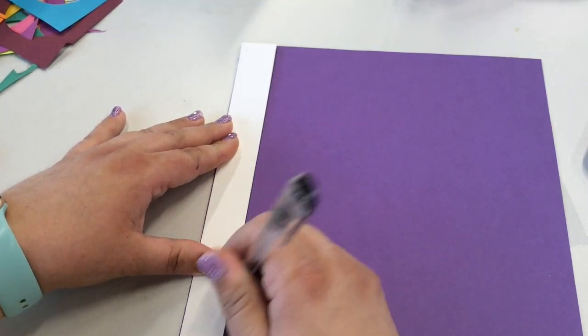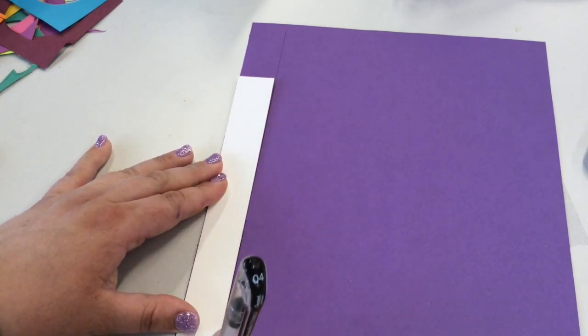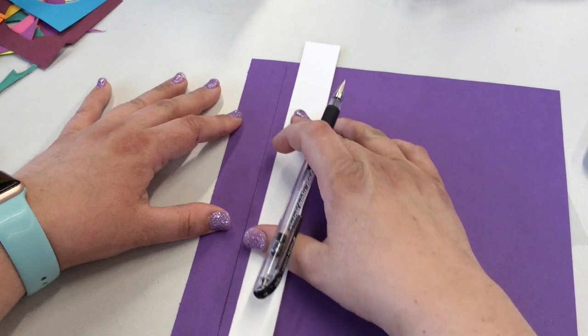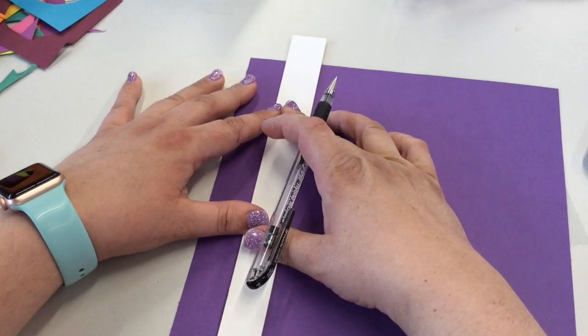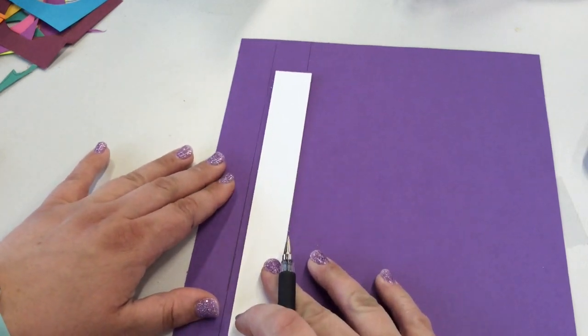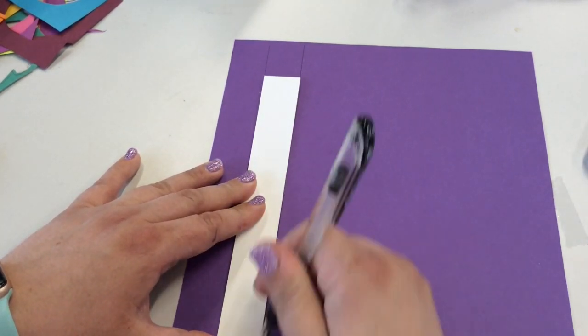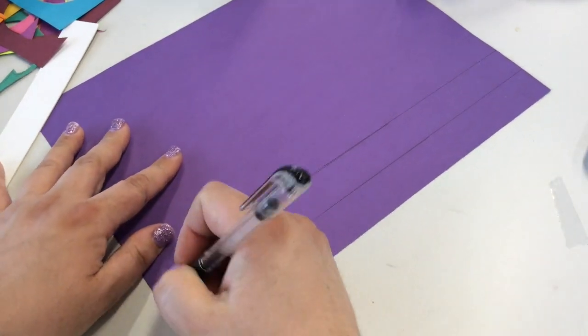Make sure your paper is going the tall way first. Trace the straight edge along the left-hand side. Do this two times, making sure the line goes all the way from the top of your paper to the bottom of the paper. You'll need to move your straight edge to do this.